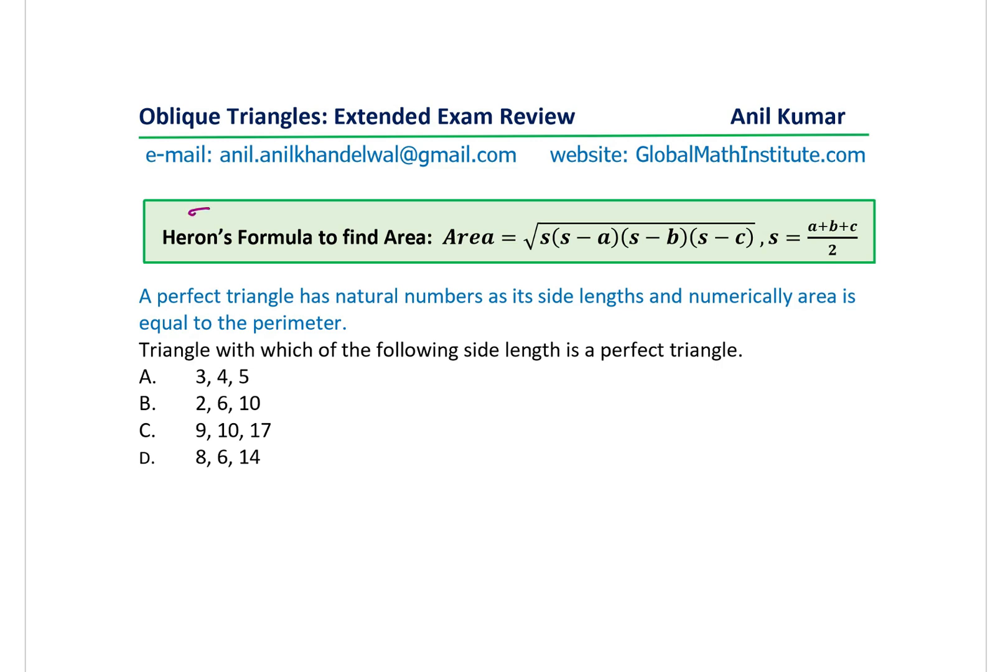So if three sides are given, let me write down S, S, S. In that case, Heron's formula is used. The formula is S times S minus A times S minus B times S minus C, where S is the semi-perimeter. A plus B plus C is the perimeter divided by 2.